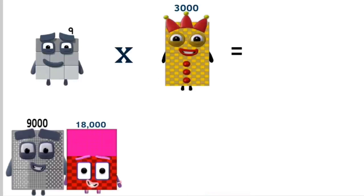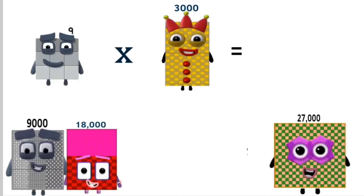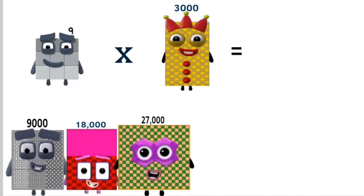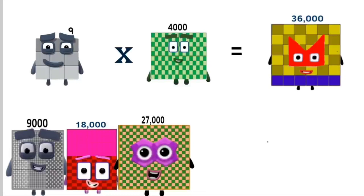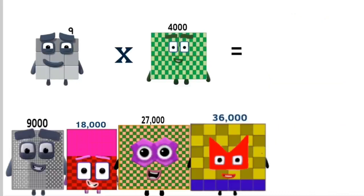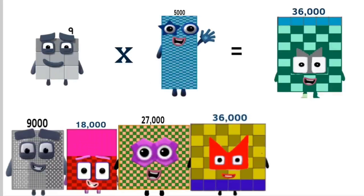Times 3,000 equals 27,000. Times 4,000 equals 36,000. Times 5,000 equals 45,000.